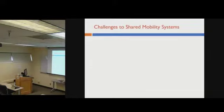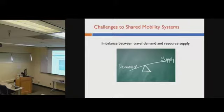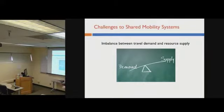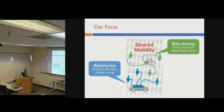But shared mobility systems always have some challenges. One of the most critical ones, and the one we're really interested in, is the imbalance between travel demand and resource supply. This imbalance can be spatial, temporal, or both, and it is something all shared mobility companies are struggling with. Today I will introduce two approaches we developed to address this issue for two different shared mobility systems — one for bike sharing and one for ride sharing.